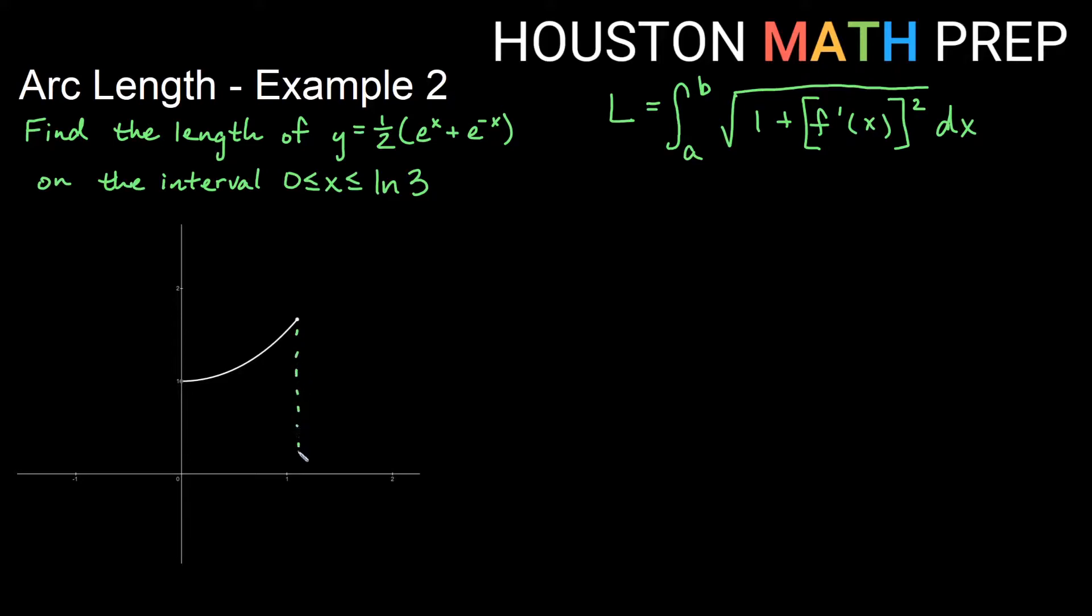My interval here is 0 to ln3. So if you think about dropping down to the x's here, we're going from 0 to ln3, which is a little bigger than 1, and we are finding the length.